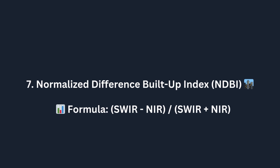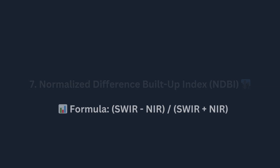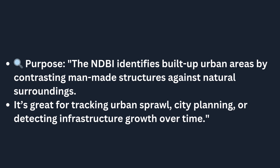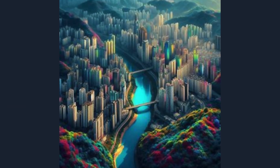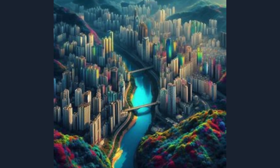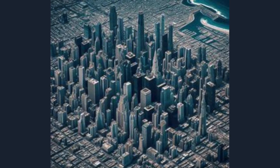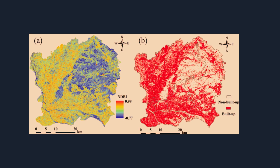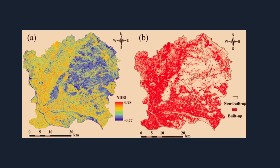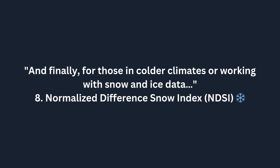Now let's shift from natural environments to man-made structures. The seventh index is the Normalized Difference Built-Up Index, or NDBI. The formula is: NDBI = (SWIR − NIR) / (SWIR + NIR). The NDBI identifies built-up urban areas by contrasting man-made structures against natural surroundings. It's great for tracking urban sprawl, city planning, or detecting infrastructure growth over time. By comparing SWIR and NIR, NDBI can easily separate urban areas from natural landscapes, helping in urban planning, development monitoring, and infrastructure analysis.